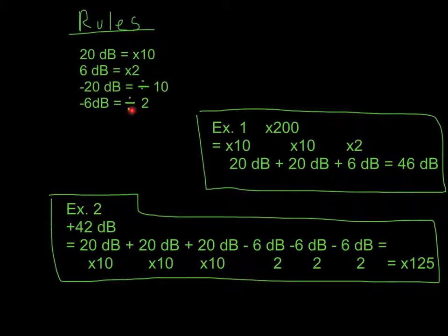So let's look at a few examples. If I have a voltage that is 200 times more than another one, how can I make 200 out of 10s and 2s? Well, I can make 200 out of 10 times 10 times 2, and that's the equivalent of 20 plus 20 plus 6, which is going to be 46 dB. So times 200 is the same thing as 46 dB.